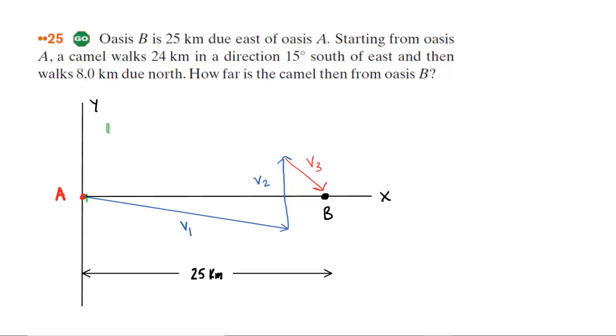Now, the camel starts from Oasis A and it walks 24 kilometers in a direction 15 degrees south of east. So you can imagine a camel following a straight line trajectory traveling in a southeast direction as indicated by this green vector, and this angle right here is going to be 15 degrees. Then the camel decides to turn and walk 8 kilometers due north. So we have another vector right here showing the camel traveling due north, and that distance will be 8 kilometers. We have labeled that vector or that trajectory V2.